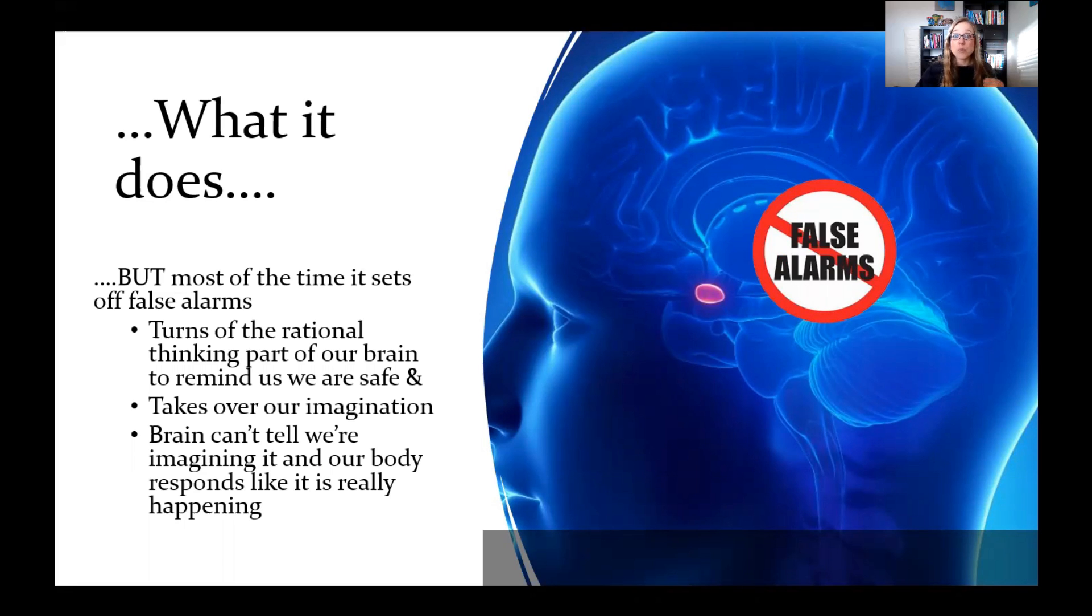And when that alarm's rung, the rational thinking part of our brain that is usually there to tell us it's not a big deal, just calm down, there's nothing there, nothing to worry about, that part of our brain is turned off. And so that's why we get really upset when other people try to talk to us to calm down, there's nothing to worry about because that part of our brain can't hear that message.